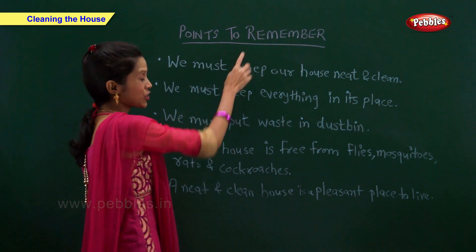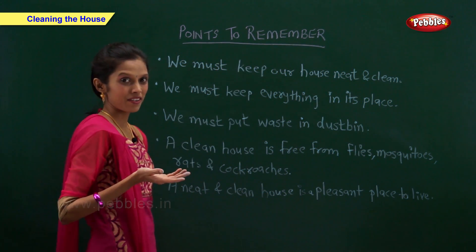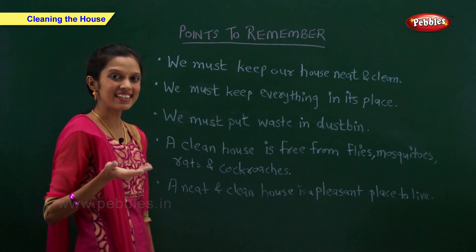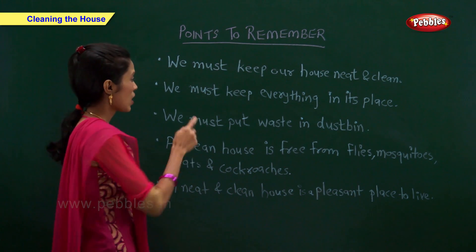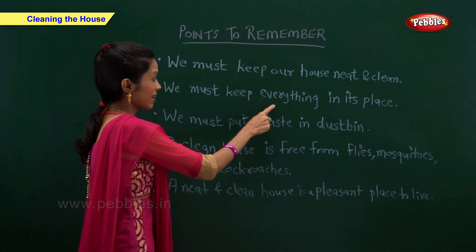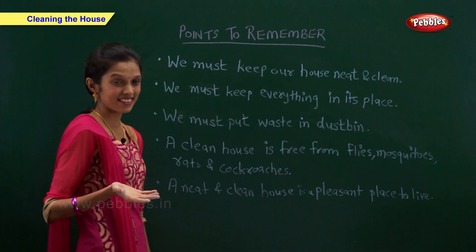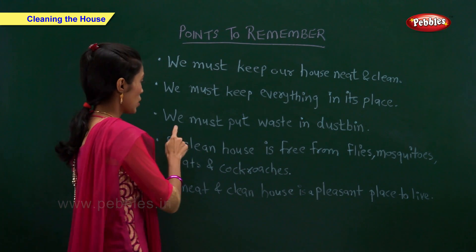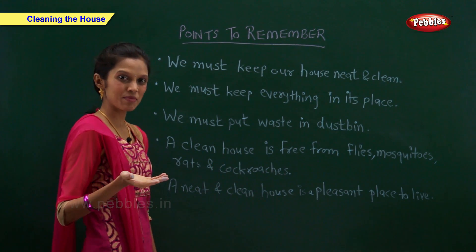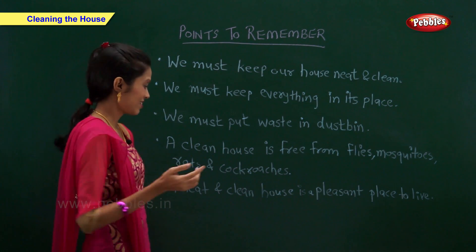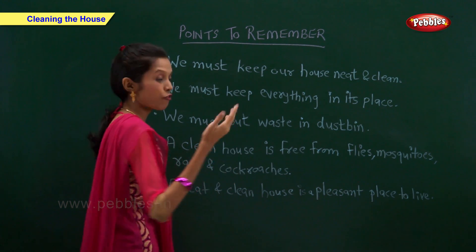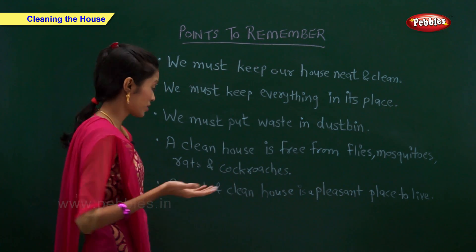Points to remember: We must keep our house neat and clean. We must keep everything in its place. We must put waste in the dustbin. A clean house is free from flies, mosquitoes, rats and cockroaches.